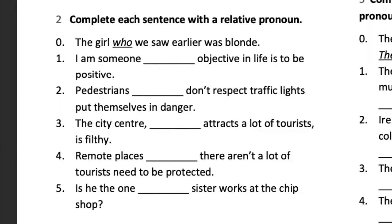Hey Andrés, good to hear from you, good afternoon. Number two — read the instruction and also the example, please. Complete each sentence with a relative pronoun. 'Nagir, who we saw earlier, was blonde.' About the girl, we use 'who.' Now for number one.